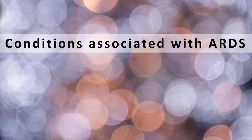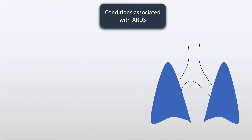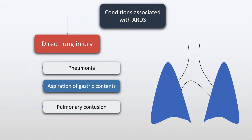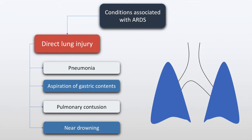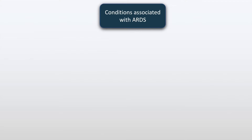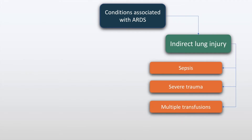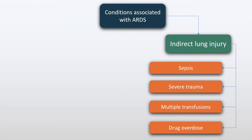Conditions associated with Acute Respiratory Distress Syndrome may be related to direct lung injury, and these include pneumonia, aspiration of gastric contents, pulmonary contusion, and near drowning. On the other hand, conditions due to indirect lung injury include sepsis, severe trauma, multiple transfusions, and drug overdose.